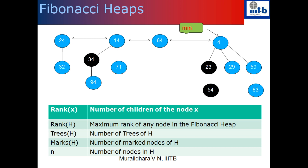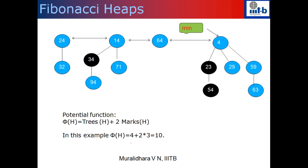Since we are going to talk about amortized analysis, let's start with the potential function. The amortized cost is the actual cost plus the potential difference, so once I define the potential function, the amortized cost is defined for each operation. For Fibonacci heaps, the potential function is defined as the number of trees plus twice the number of marked nodes: Φ(h) = trees(h) + 2·marks(h). In our example, the number of trees is 4 and the number of marked nodes is 3, so the potential is 4 + 2×3 = 10.